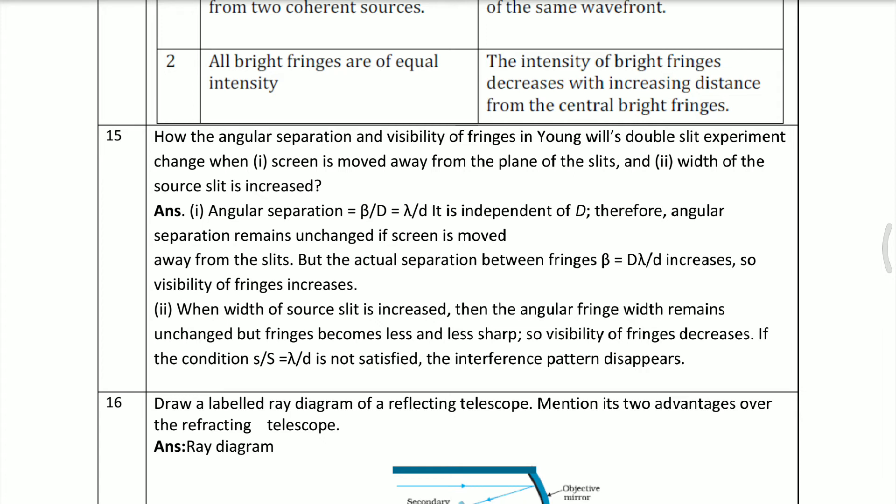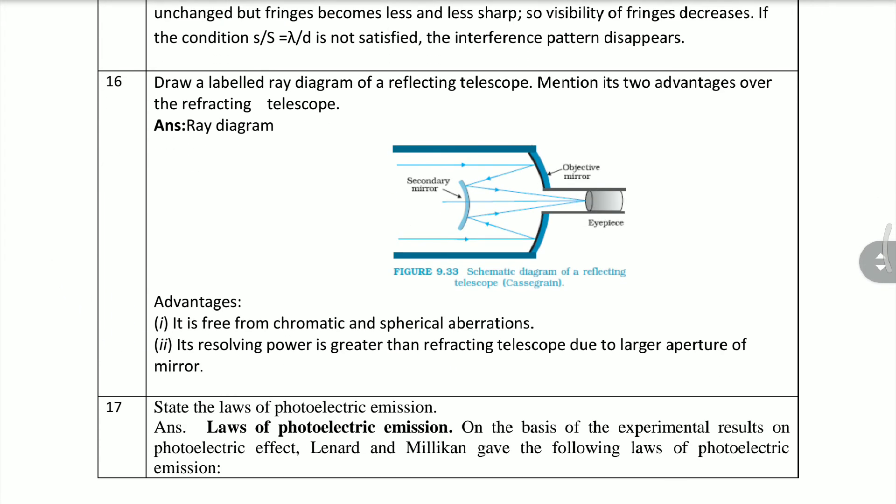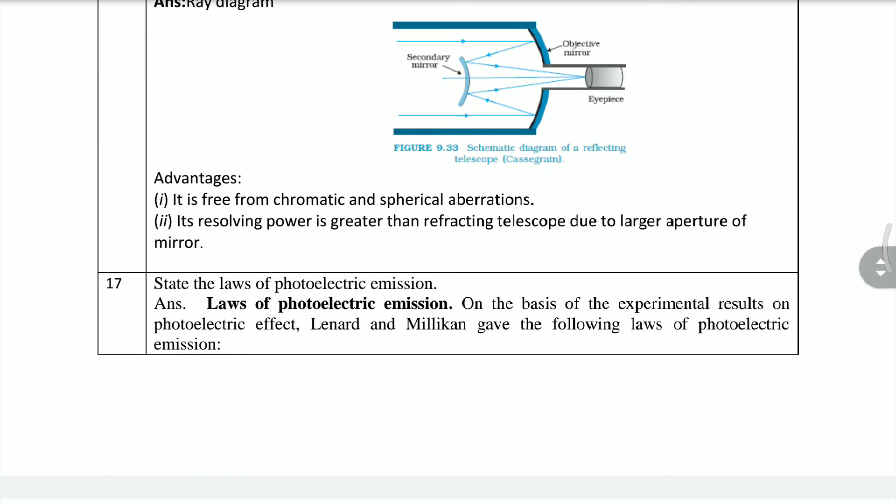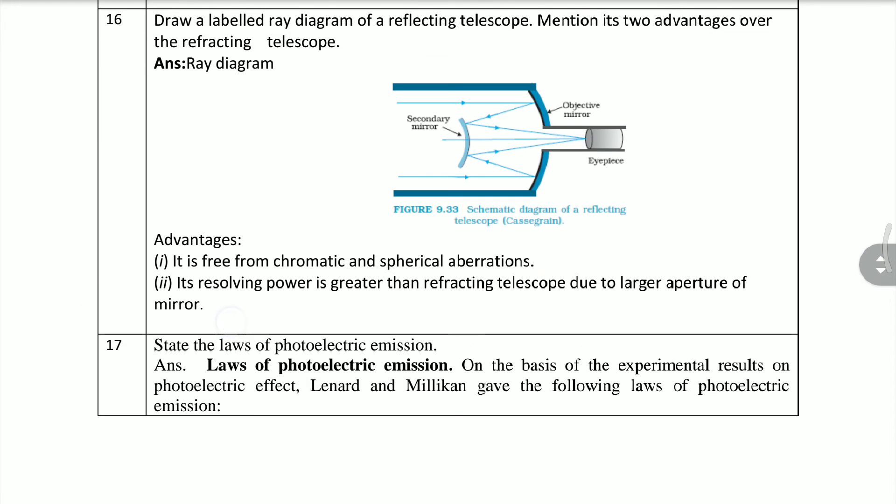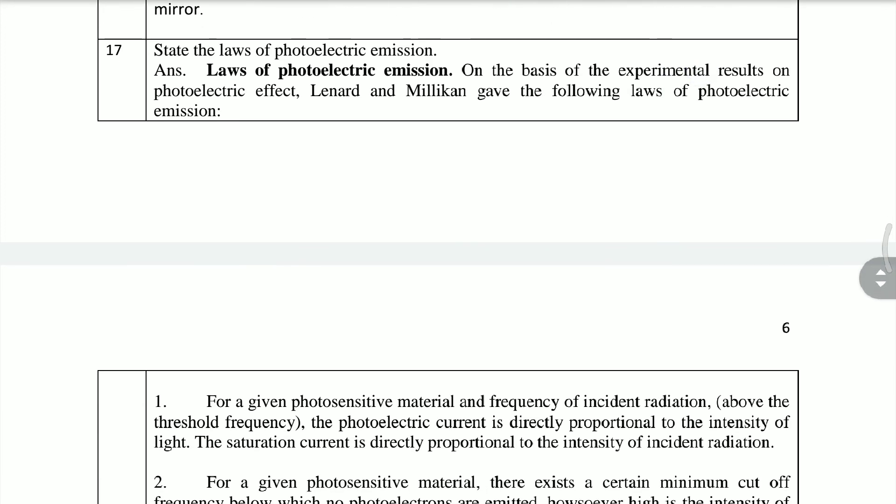How does the angular separation and visibility of fringes in Young's double slit experiment change when screen is moved away from the plane of slits and width of the source slit is increased? Draw a labeled ray diagram of a reflecting telescope. Important advantages of reflecting telescope: it is free from chromatic and spherical aberration, and its resolving power is greater than refracting telescope due to larger aperture of mirror.